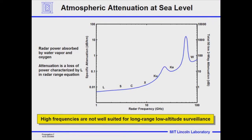In radar handbooks and textbooks there are curves where you can look up the attenuation as a function of frequency for a beam pointed upward at one, two, three, or eight degrees, taking into account the different attenuations for a standard atmosphere. What I'm talking about here is the average attenuation at sea level. The atmosphere varies in its properties of temperature, pressure, humidity, and density — all those attributes which cause attenuation.